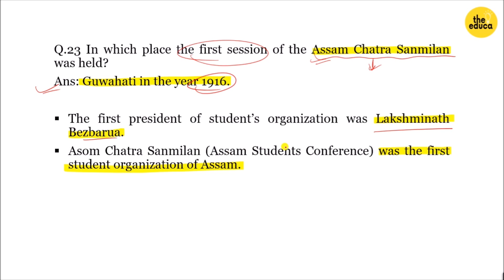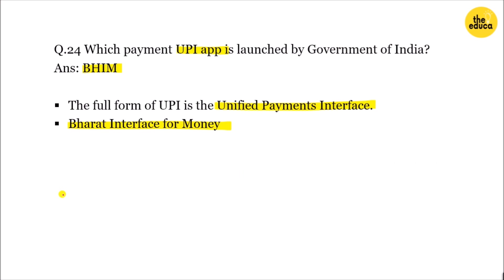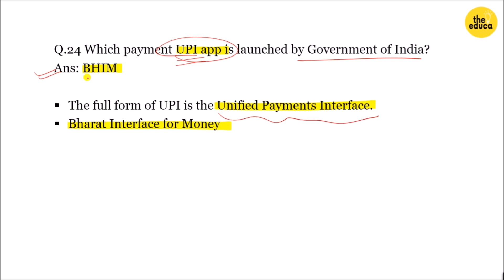Satra Hanmilan was the first student organization of Assam. The next question is about UPI — Unified Payments Interface — which was launched by the Government of India. The full form of BHIM is Bharat Interface for Money.